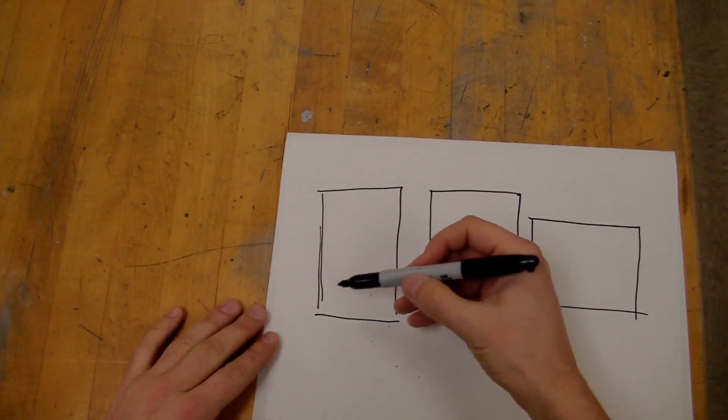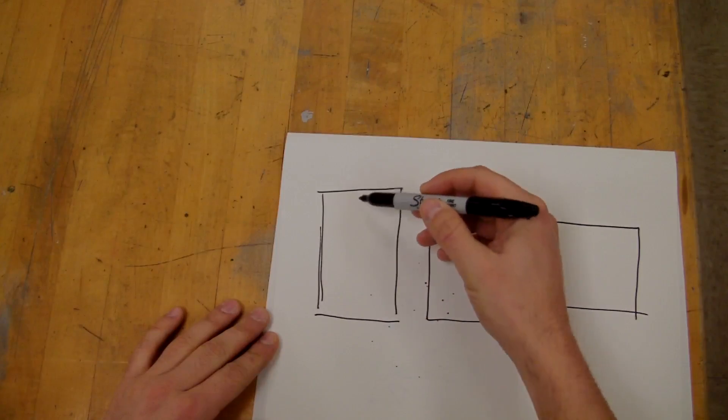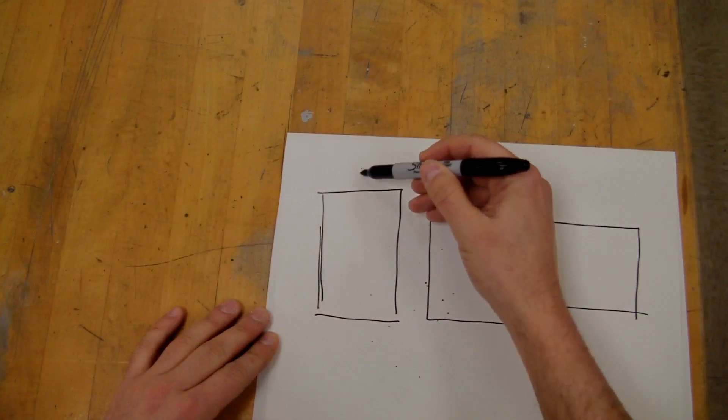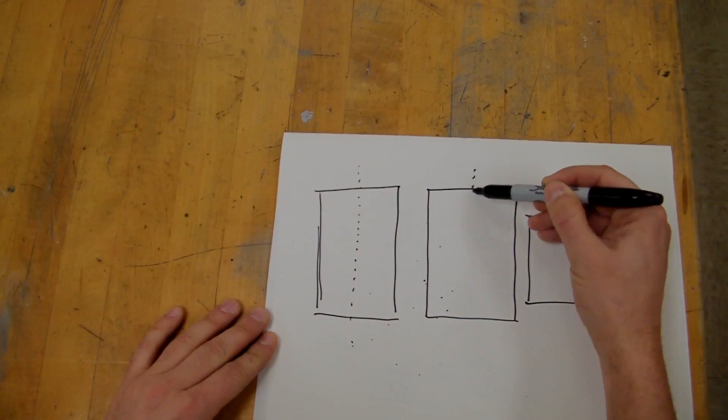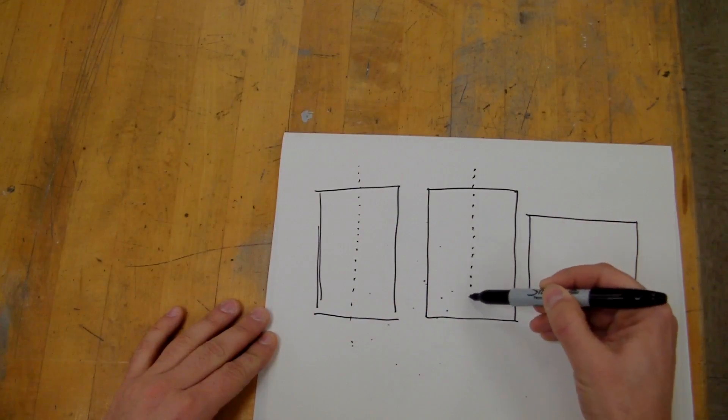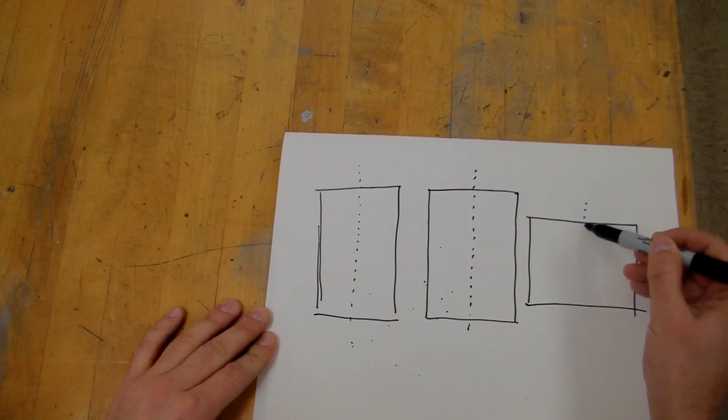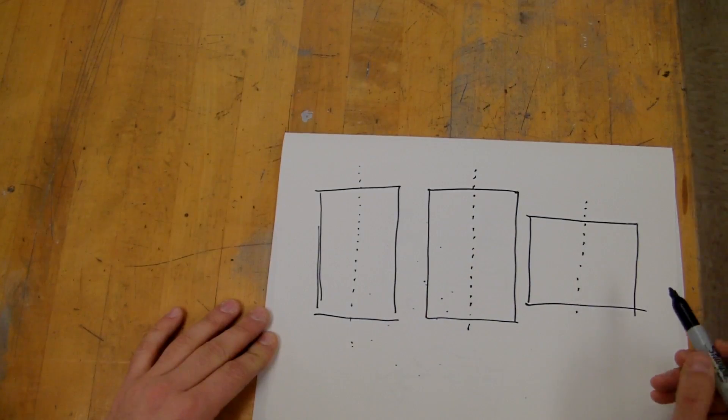So what I'm going to do is I'm just going to kind of make a dashed line down the center here, so that I make sure whatever I do to one side of this picture I am doing to the other side. They have to be symmetrical.